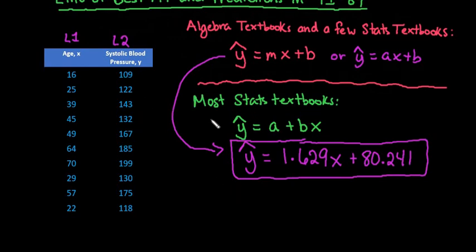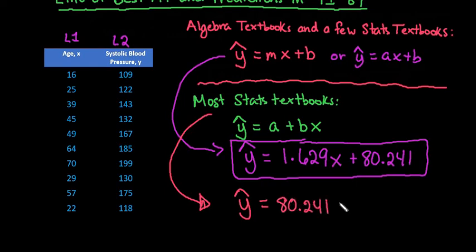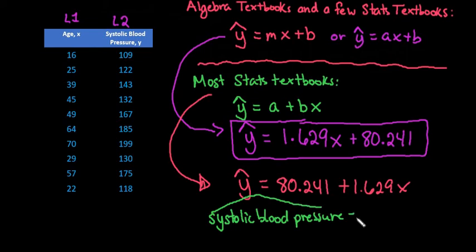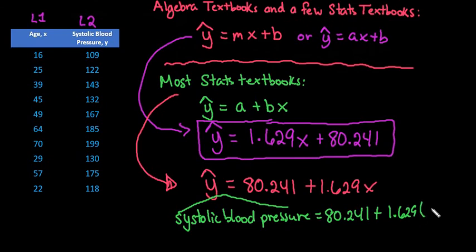If you are using this textbook, which most stats textbooks use, you would just switch the order. So we would do y hat equals, and this is option 8 in your calculator, 80.241 plus 1.629x. And if you're doing it the real statistics way, you would actually, if you were doing this in the real world, probably name it and say that this is the systolic blood pressure. And so you would actually name your variable so that you know what it represents. And then you would just put a hat over it. 80.241 plus 1.629 times the age.